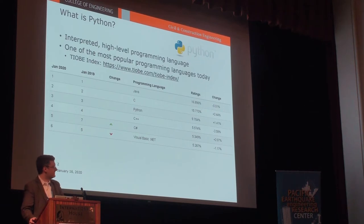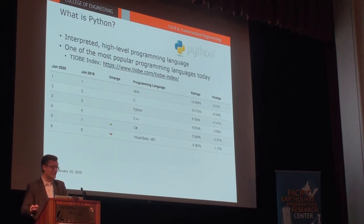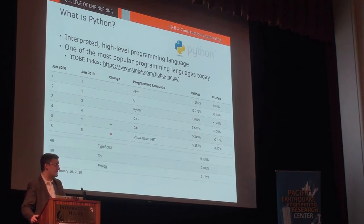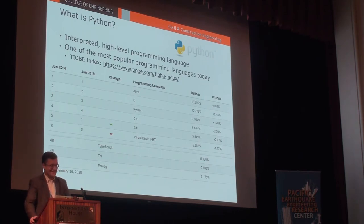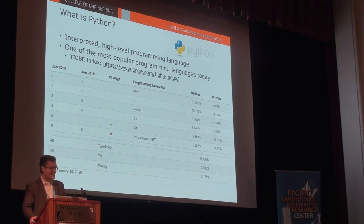These are the top six languages as of this month. I kind of promised myself I wouldn't make this a presentation about OpenSees, but I will point out, if you look at the bottom of this list, at number 49 is Tcl - barely made the top 50. I think if OpenSees was not tied to Tcl, it probably wouldn't be on this list at all.